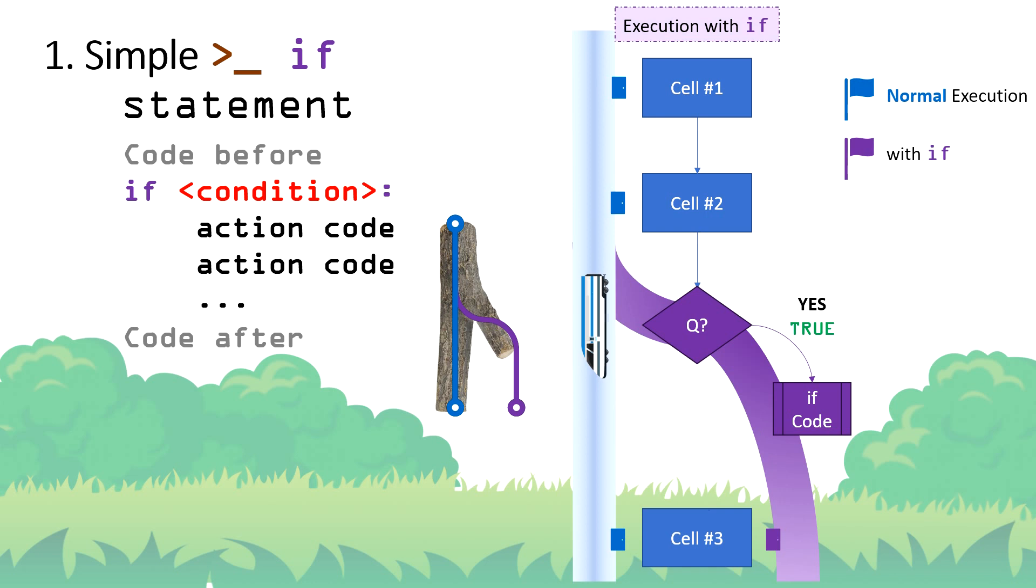This is like buying ice cream in Little Red Riding Hood example. Finally, the code execution will be directed back on track at next code cell number three. However, if the answer of this question came to be no, which means in programming false, our program will not execute anything and just move directly to the next code cell number three.